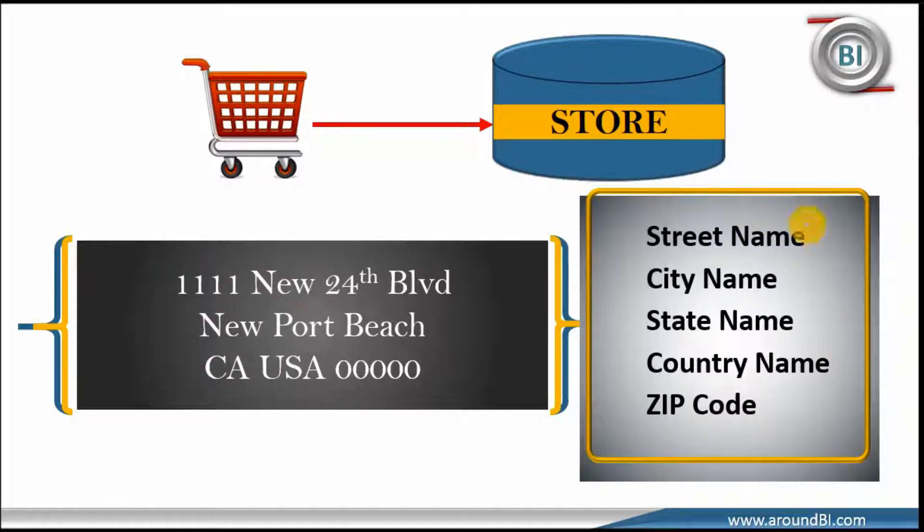Generally, we store all these descriptive information and attributes of a dimension in a separate dimension table. A dimension table keeps these attributes that describes the objects in a fact table. For example, total revenue by store city. So we will start creating a store dimension table with these attributes.